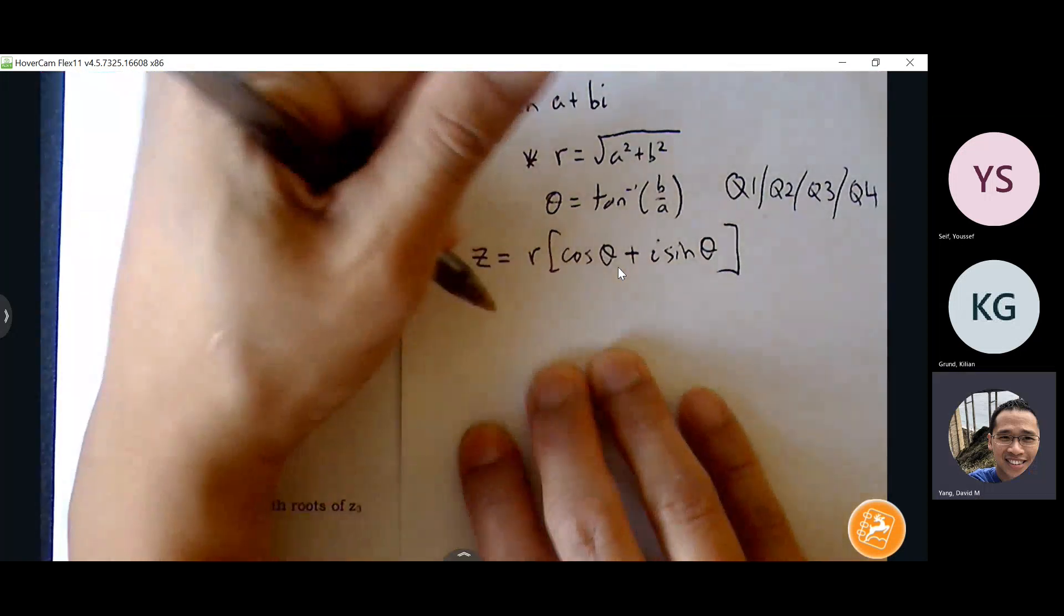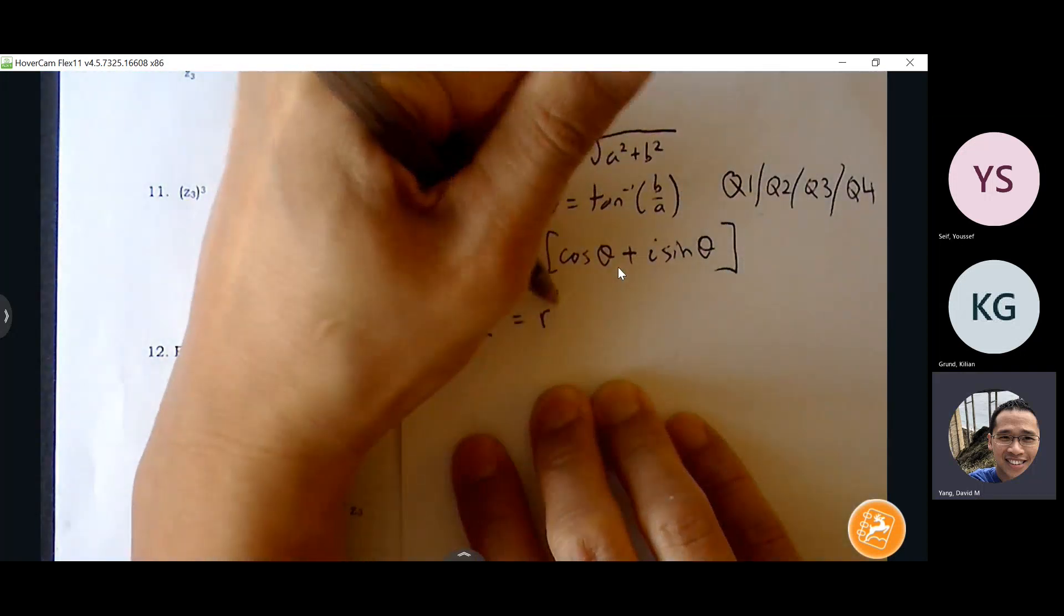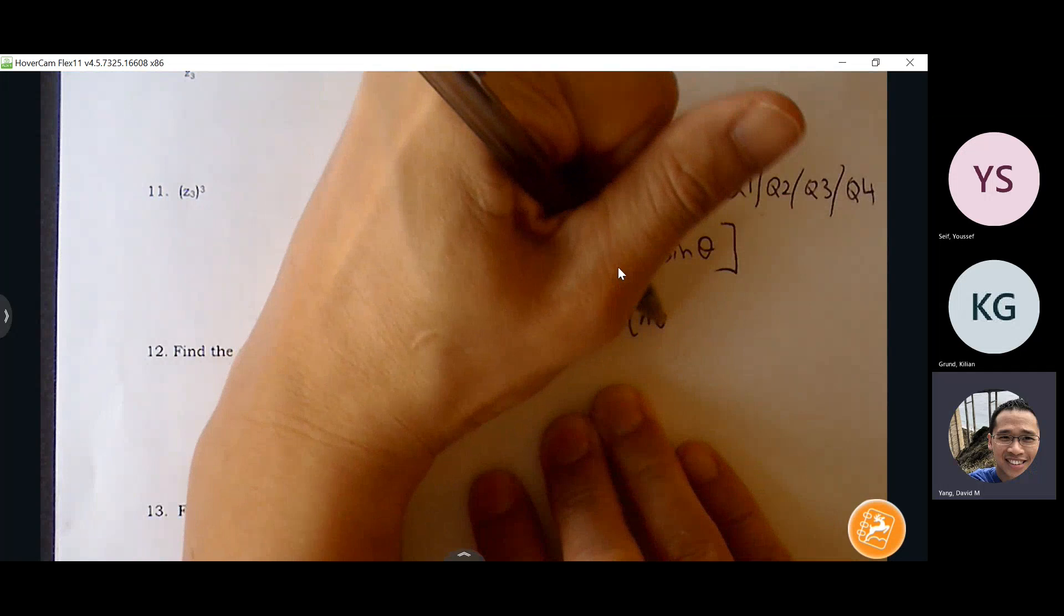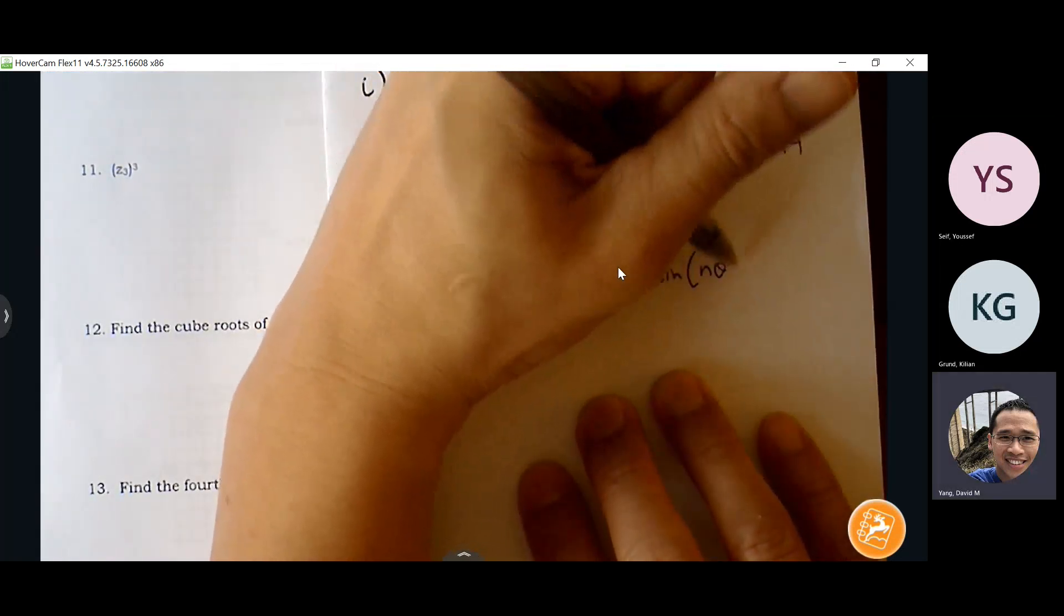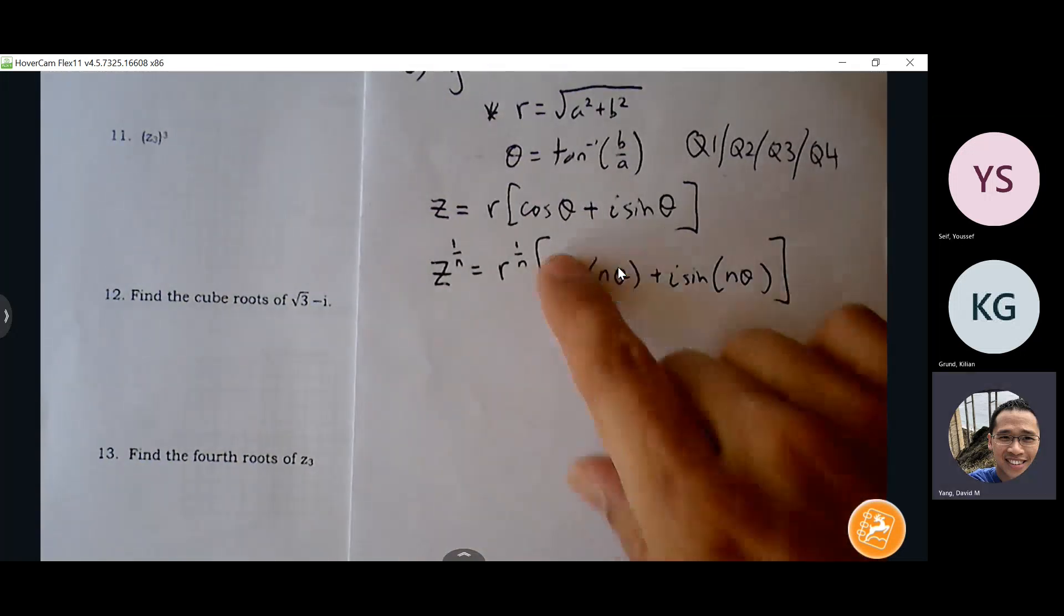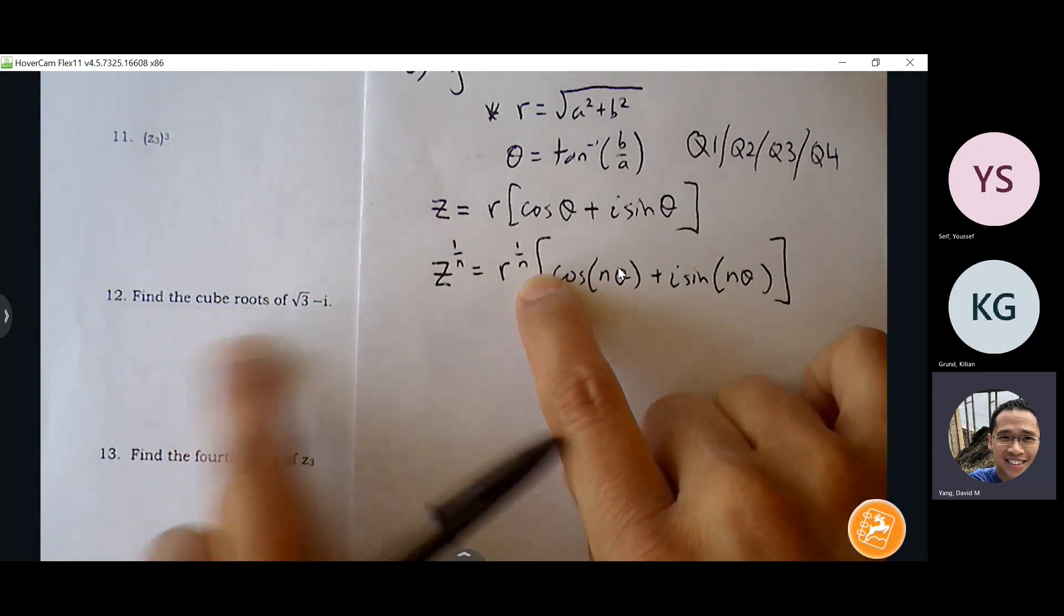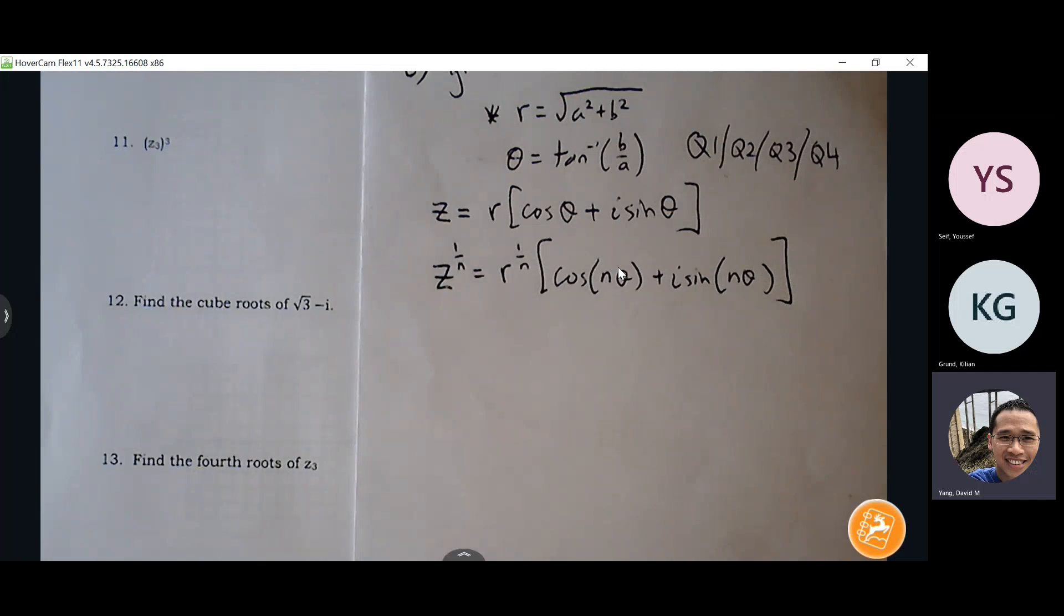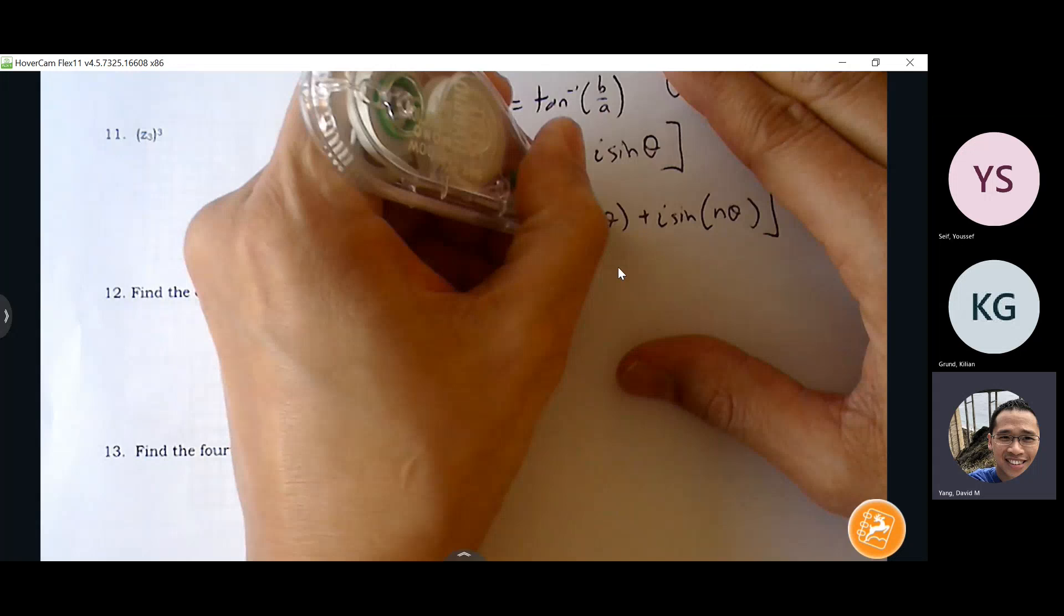Alright, so now you want to find the roots, so it's always going to be Z to the one over n equals R to the one over n times cosine of theta over n plus i sine of theta over n. And the n is always going to match whatever root you're dealing with, cube root, fourth root, fifth root. Oops, sorry, my bad, I messed up something here, not n times theta, it's one over n times theta.